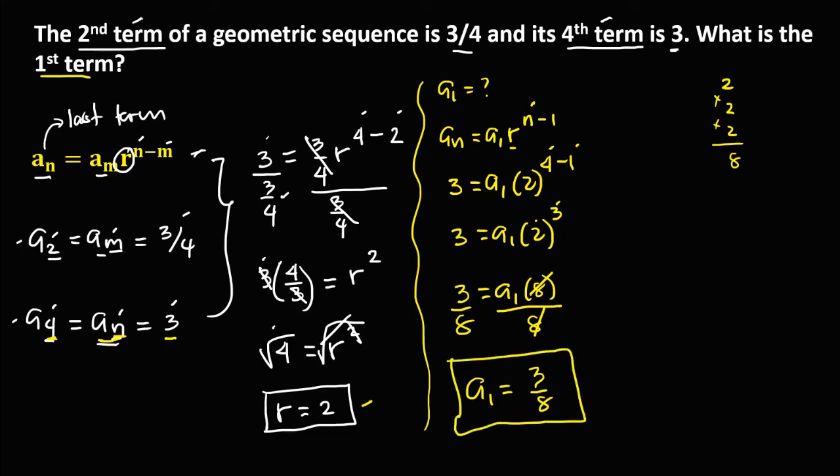So 3 over 8 is the first term of this geometric sequence.